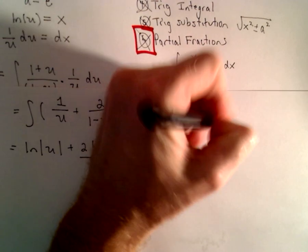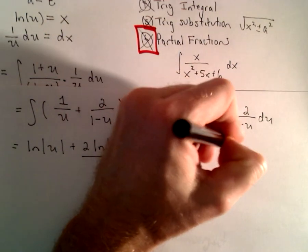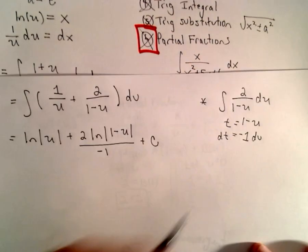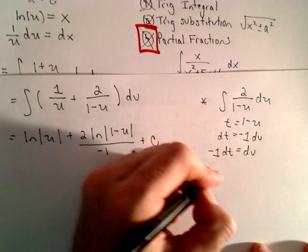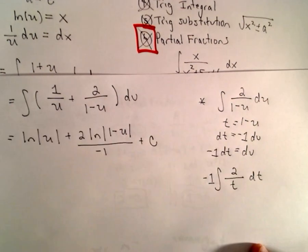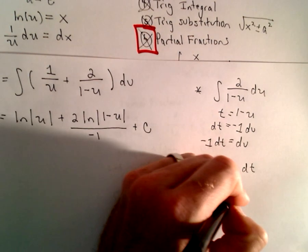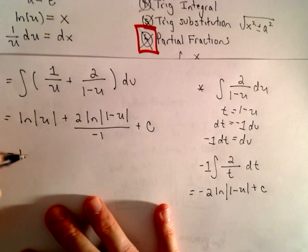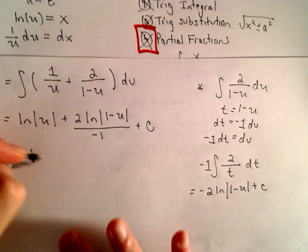If you want to see why, do a u-substitution on that second part. Let t = 1 - u, so dt = -1 du, meaning we divide by -1. Then we're integrating 2·(-1) / t, which gives -2 ln|t|. Since t = 1 - u, we get -2 ln|1 - u| + C. That's where the negative 2 comes from — when you do the substitution you pick up that coefficient.